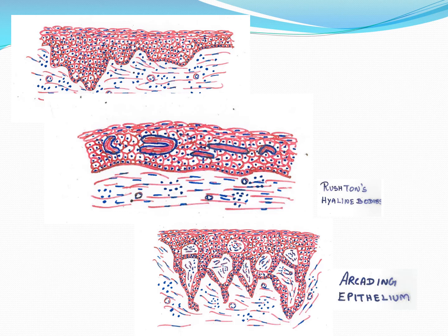The epithelial lining is made up of non-keratinized stratified squamous epithelium — there is no keratin layer normally. This epithelium is usually hyperplastic — increased in thickness due to inflammation, which causes the cyst lining epithelium to proliferate. So we can see a hyperplastic, non-keratinized stratified squamous epithelium. Below this is the connective tissue, made up of inflammatory cells — mostly lymphocytes — blood vessels, collagen fibers, and fibroblasts.